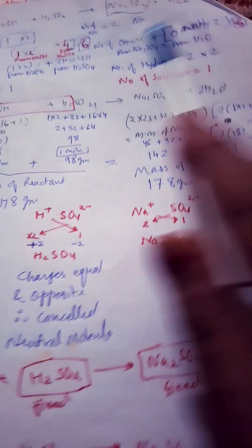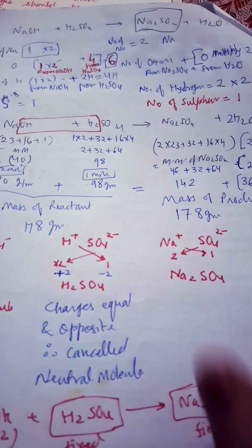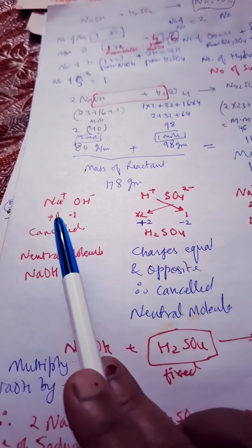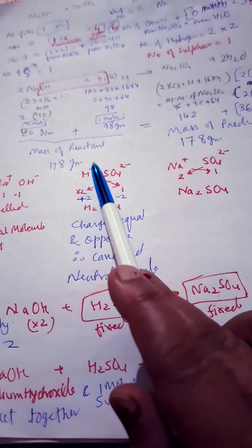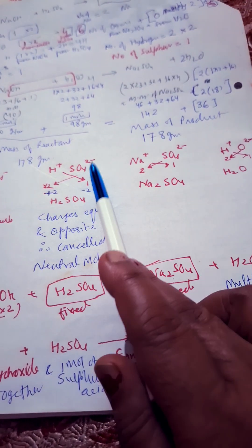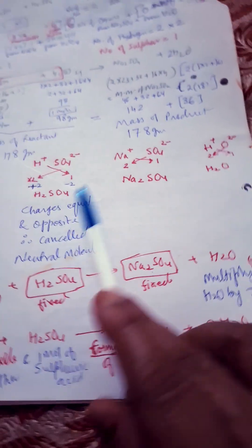Okay, this is the way how to balance the chemical equation. Clear? Now see NaOH formula, how to write. One one cancel out, so no need to change. Here H is one, one positive, SO two negative, H is one positive.